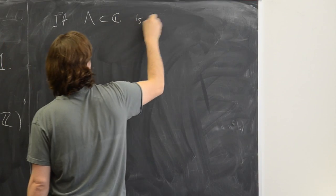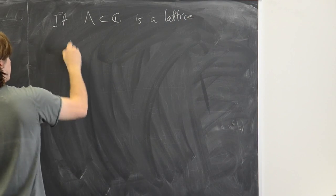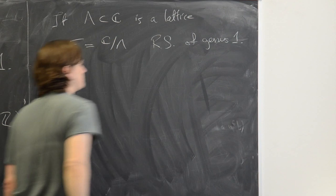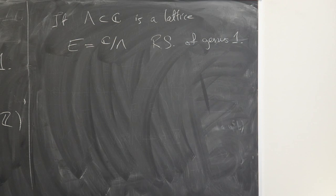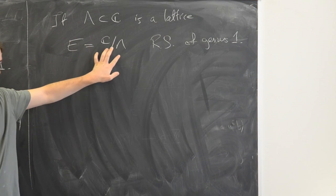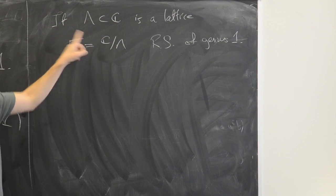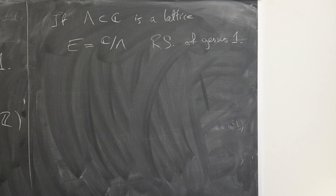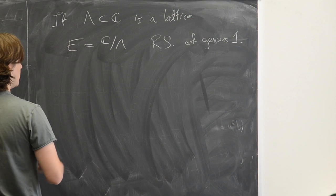Conversely, if you start with a lattice Λ in ℂ, you can form the quotient ℂ/Λ, which is a Riemann surface of genus 1. Riemann's theory of Riemann surfaces tells you this is an algebraic curve — that's not obvious; you have to construct meromorphic functions on the quotient, which means constructing doubly periodic functions on ℂ. The standard way to do that is via the Weierstrass ℘-function. All of that implies that E = ℂ/Λ is an algebraic curve of genus 1, hence an elliptic curve.